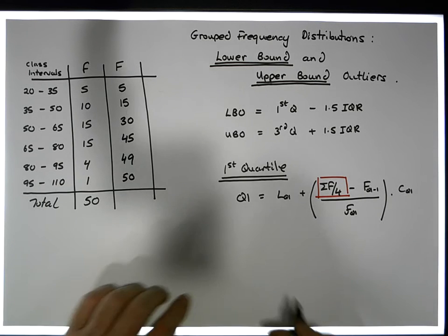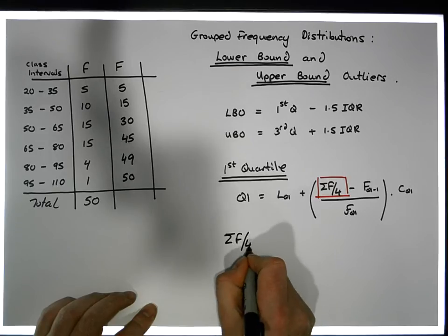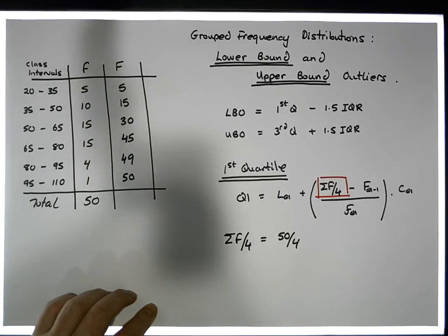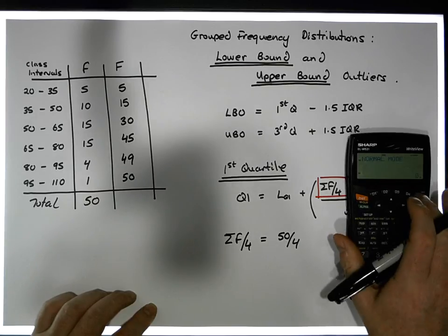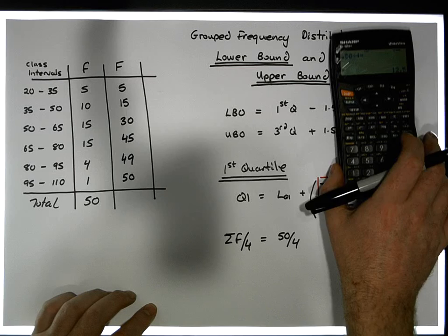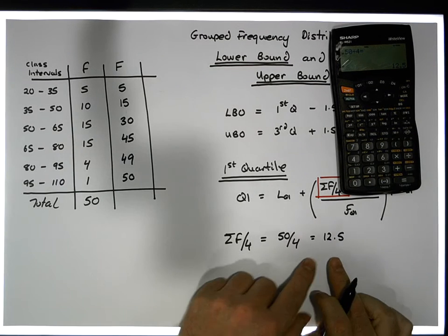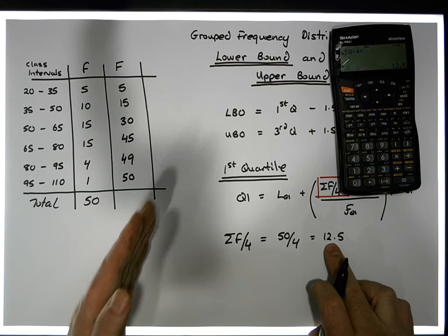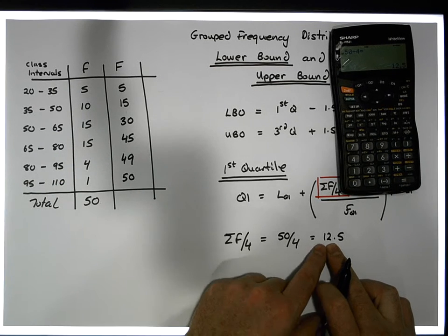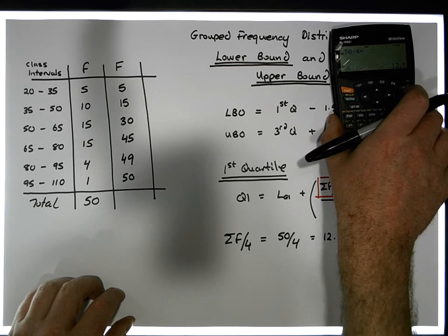So sigma F over 4 for the first quartile: sigma F over 4 is equal to 50 divided by 4, which gives us a value of 12.5. So the first quartile must be at least 12 observations along in the ordering of observations — it's actually between the 12th and the 13th observation. That's where the first quartile will reside.